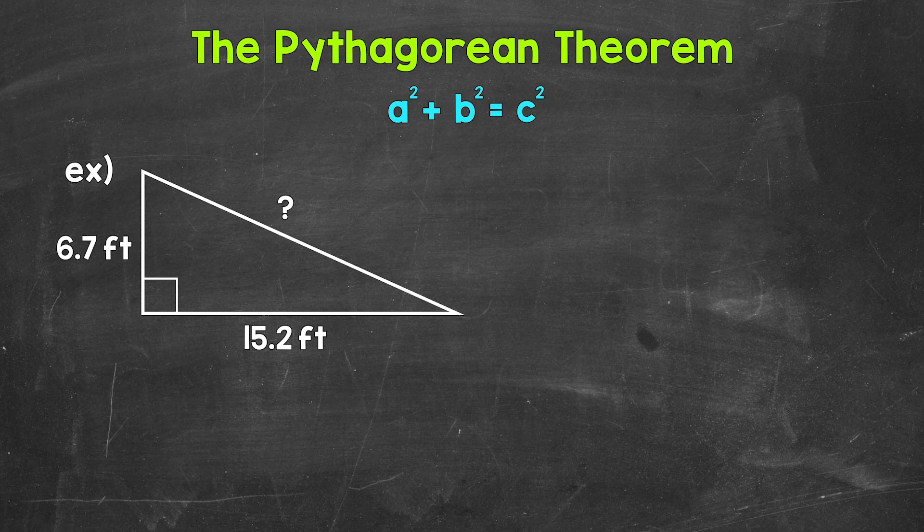If we know the lengths of two sides of a right triangle, we can use the Pythagorean theorem to find the length of the third side.